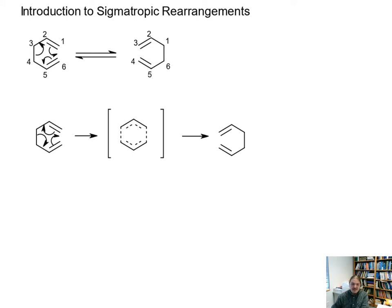And then I'm going to use this example to do one other thing. And that's to describe how it is that we name sigmatropic rearrangements. So this is a [3,3]-rearrangement.